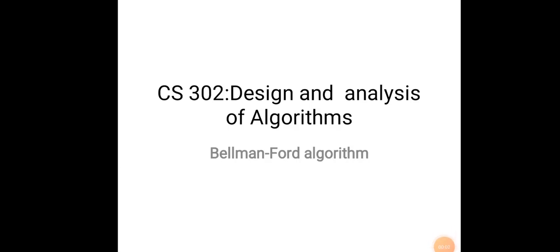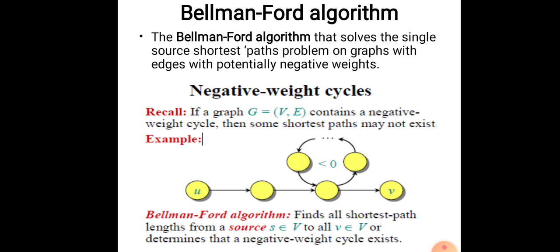Today we are going to discuss the Bellman-Ford algorithm, which is an example of a single source shortest path algorithm. In the last class we discussed Dijkstra's algorithm, which is also a shortest path algorithm. However, in Dijkstra's algorithm there are no negative edges. If an edge has a negative weight, we can't apply Dijkstra's algorithm. But in the case of Bellman-Ford, we can handle negative weight edges.